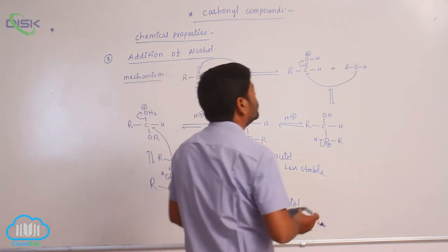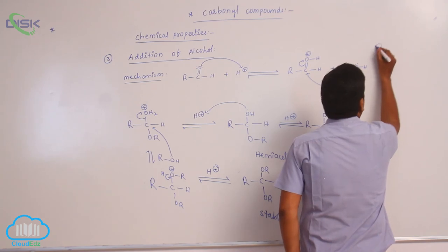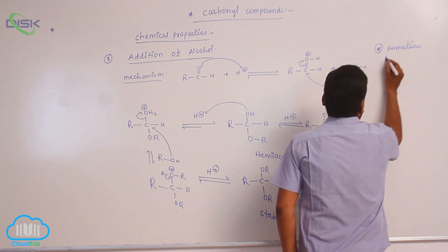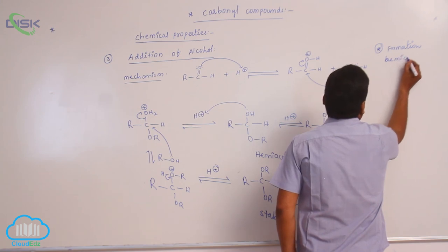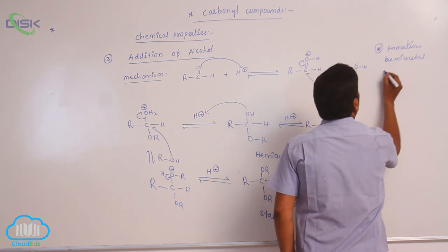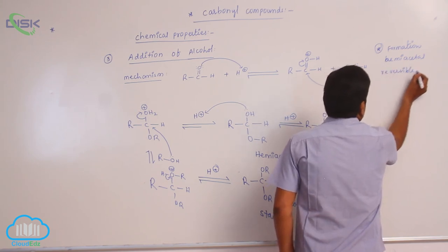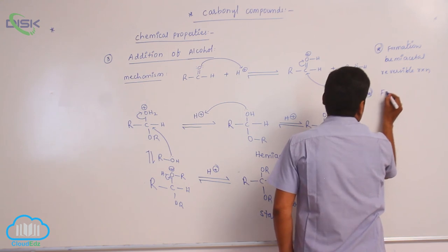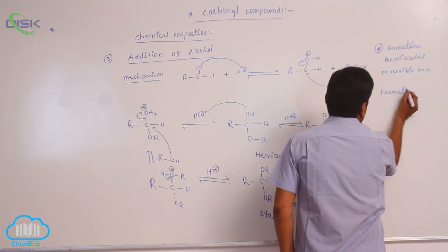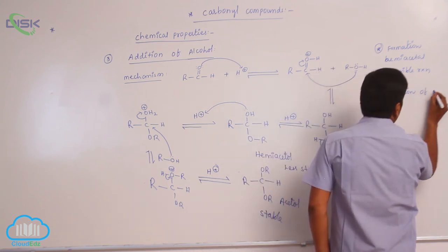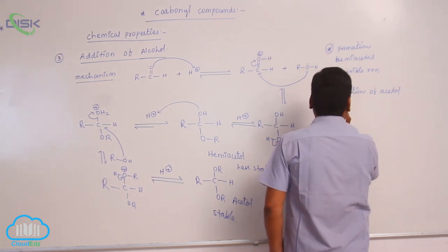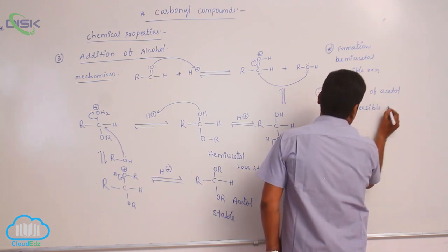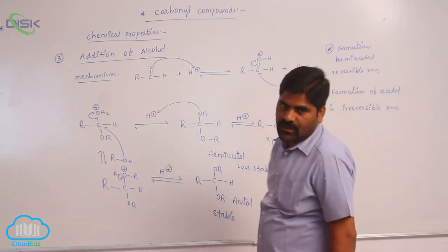The formation of hemiacetal is a reversible reaction, whereas the formation of acetal is an irreversible reaction. So hemiacetal formation can be reversed, but once the acetal is formed it is irreversible.